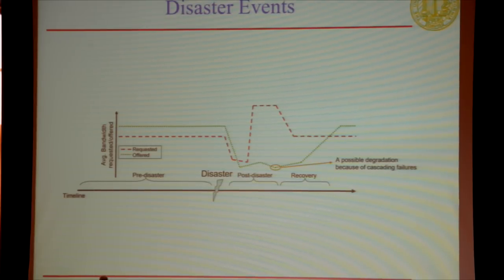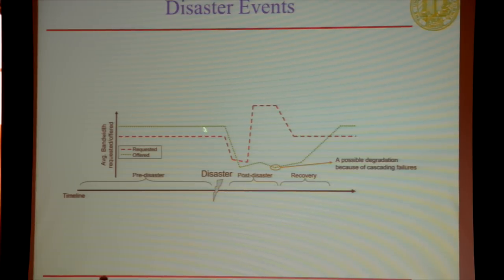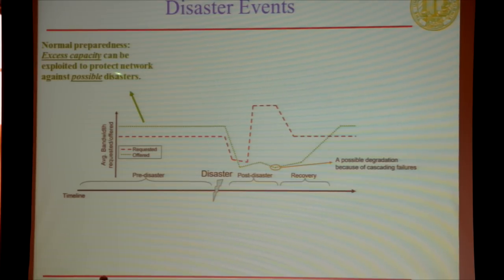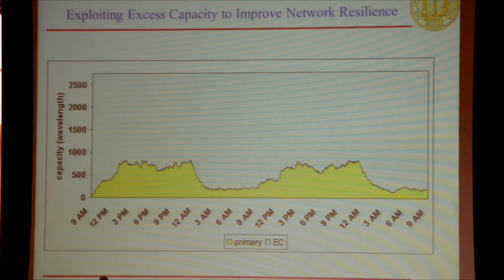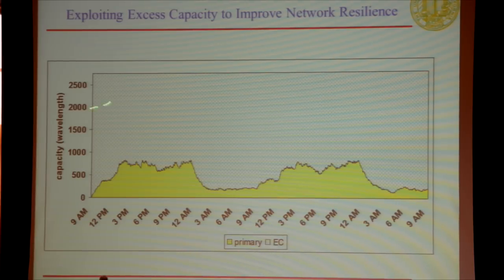This is a timeline of what happens during disaster events. Pre-disaster, there is a certain amount of capacity needed for traffic, plus additional capacity for backups. This excess capacity — the extra operational capacity kept for backup purposes or because the network is engineered for peak traffic plus headroom — is what we exploit. Some of this excess capacity can be used for resilience purposes, and we'll still have a lot left over.